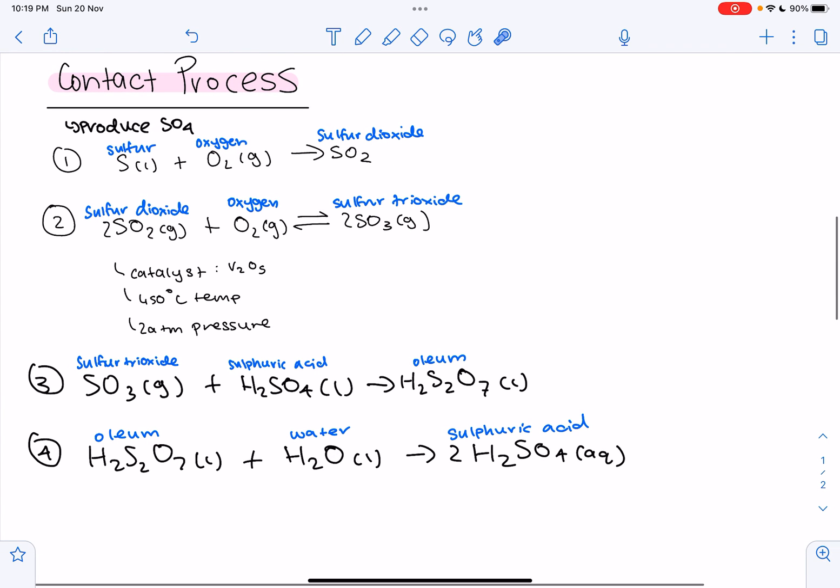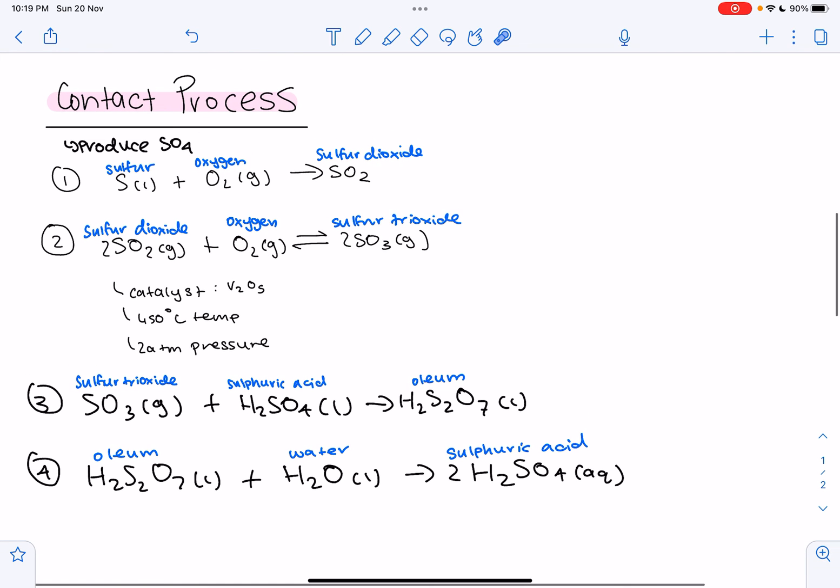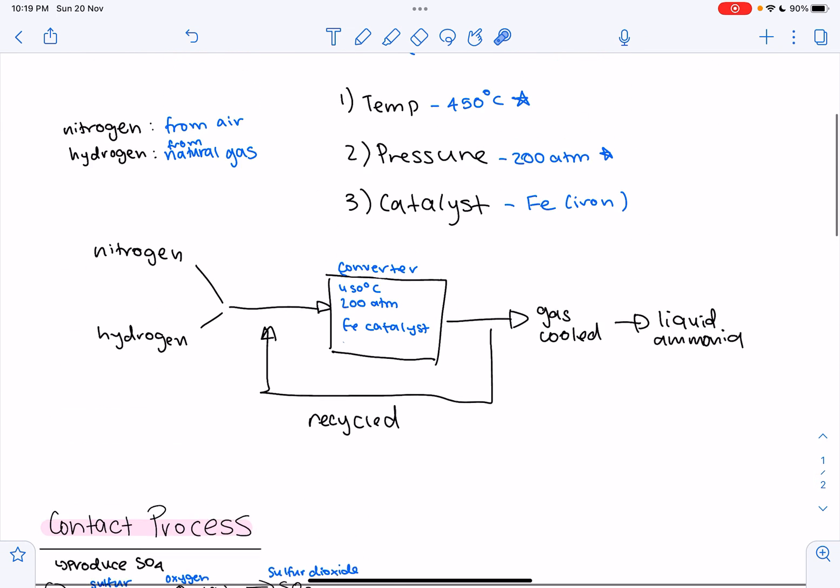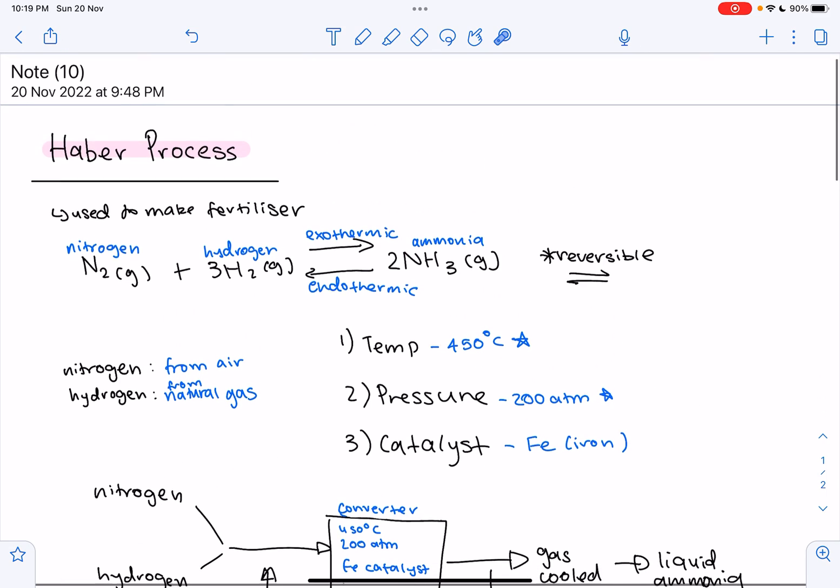Therefore, these are the four stages you need to know for the contact process, and it includes some specific details like conditions for stage two, and it is important to remember why stage three and four happen. That is all for today's video. I hope these two processes are now a lot more clear. Thank you.